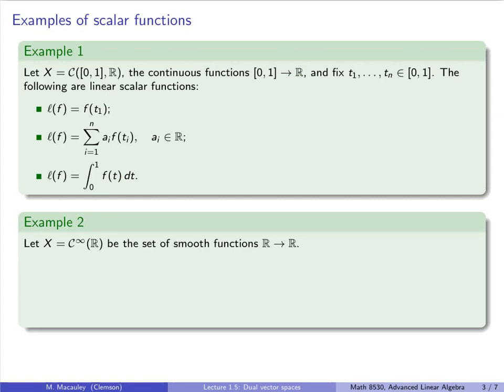So for our second example, let's look at scalar functions that arise from derivatives. So I will let X be the space of smooth real-valued functions. Smooth just means they are infinitely differentiable because we need a function to be differentiable. But it's hard to construct a function that has five derivatives but not six. Most of the ones we come up with in real life, like polynomials, exponentials, trig functions, are infinitely differentiable.